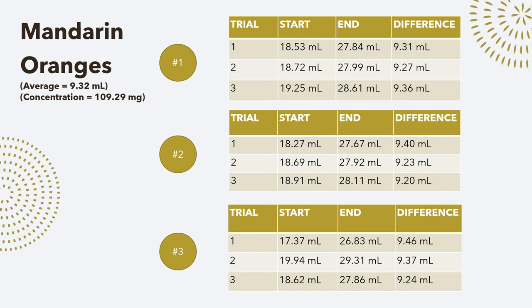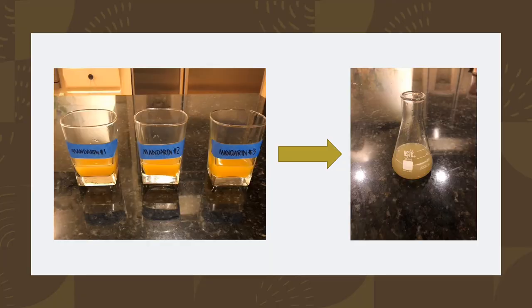Lastly, the mandarin oranges — I did the same trials and number of oranges as the navel and blood oranges. They ended up taking 9.32 milliliters of iodine to titrate and they contained 109.29 milligrams of vitamin C. The color was a little brighter than the navel orange, more orangey and yellowy, and then it turned about the same grayish orange color.